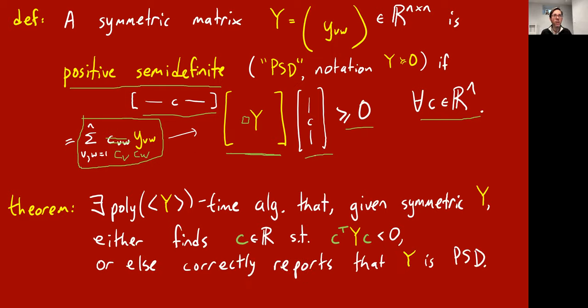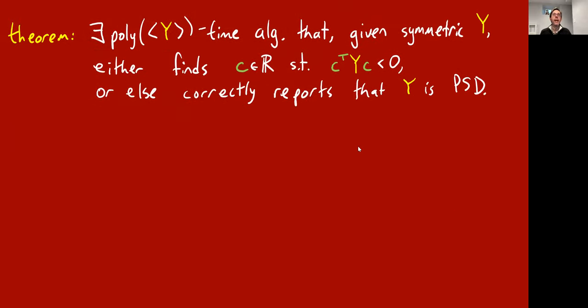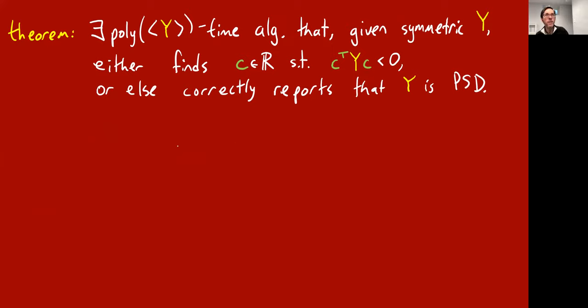And luckily, they're actually easy to characterize. Even though there are infinitely many constraints, there's a polynomial time algorithm, polynomial in the number of bits you need to write down Y. So it's given a symmetric matrix Y of numbers, it either says, yep, Y is PSD, like Y satisfies all of these inequalities simultaneously. Or it finds like a counterexample. It finds an explicit, oh, I still have some typos in the slide. Sorry. It finds an explicit vector c such that c transpose yc is not greater than or equal to 0, such that it's less than 0. Okay, so it sort of tests if a matrix is positive semi-definite. And if it's not positive semi-definite, it sort of finds a counterexample vector c that proves it.